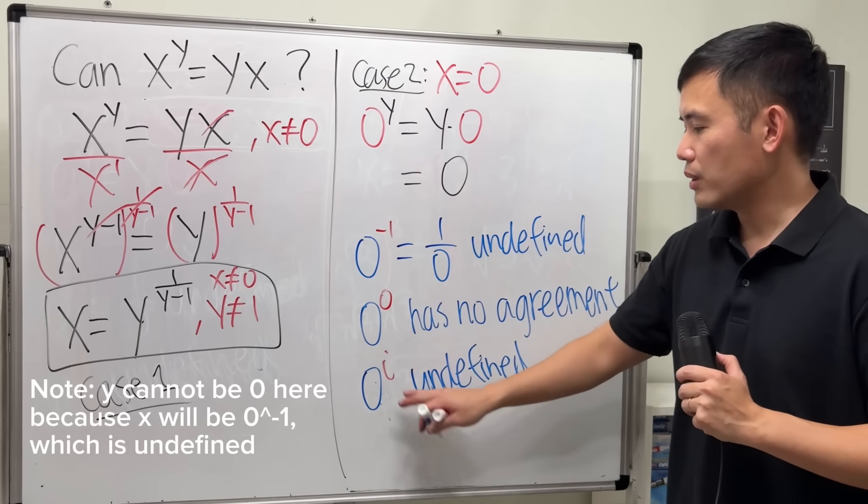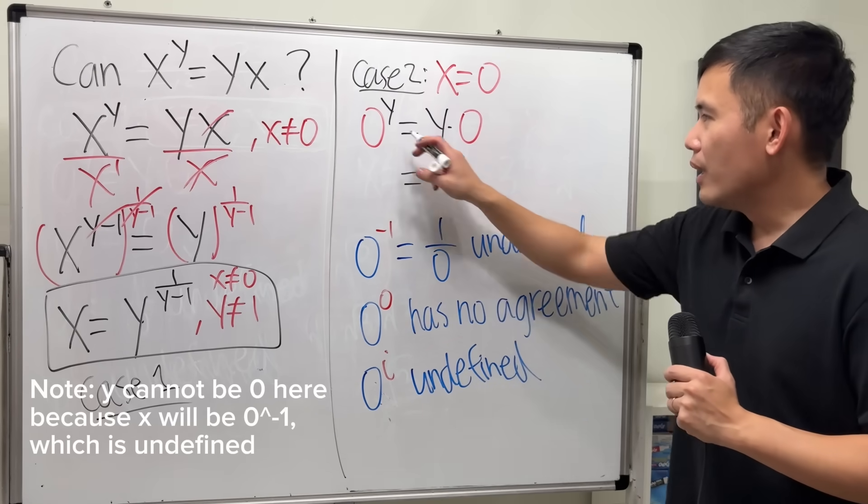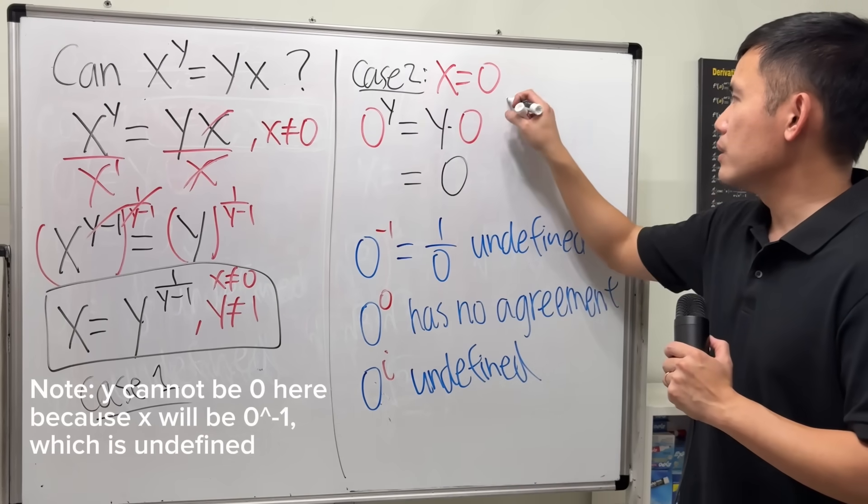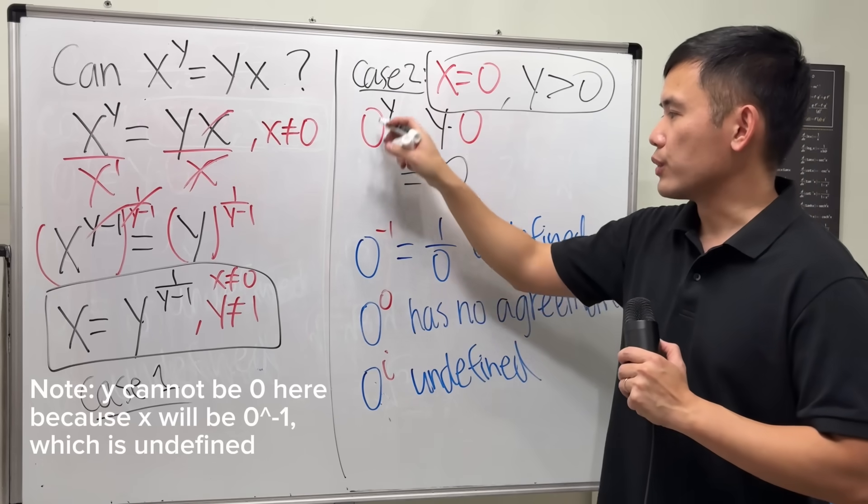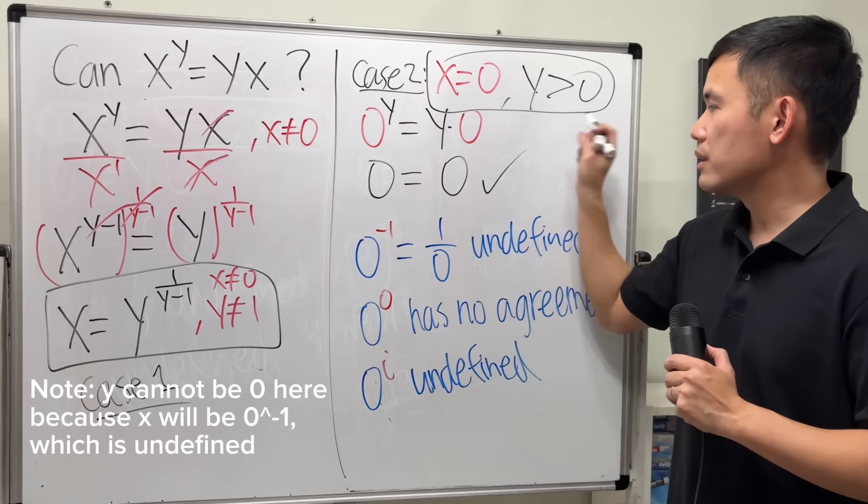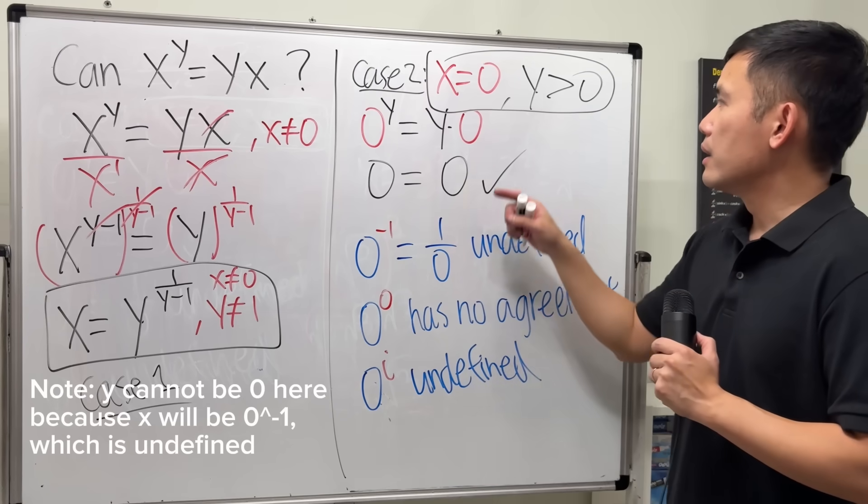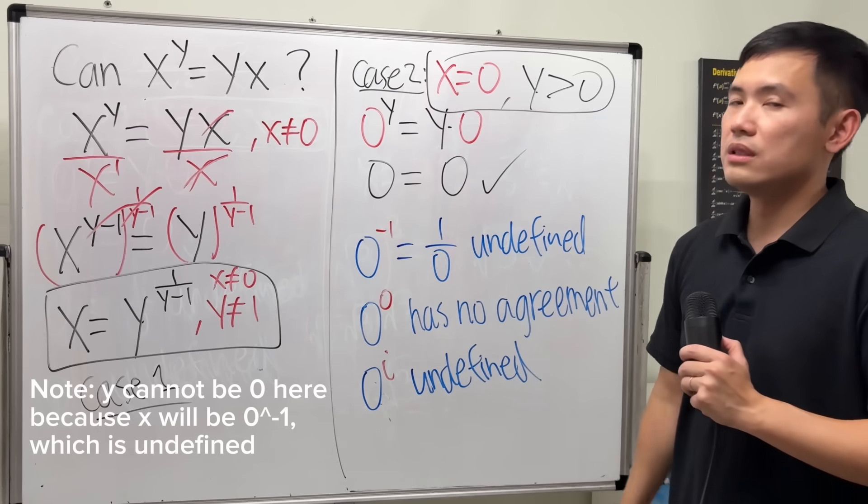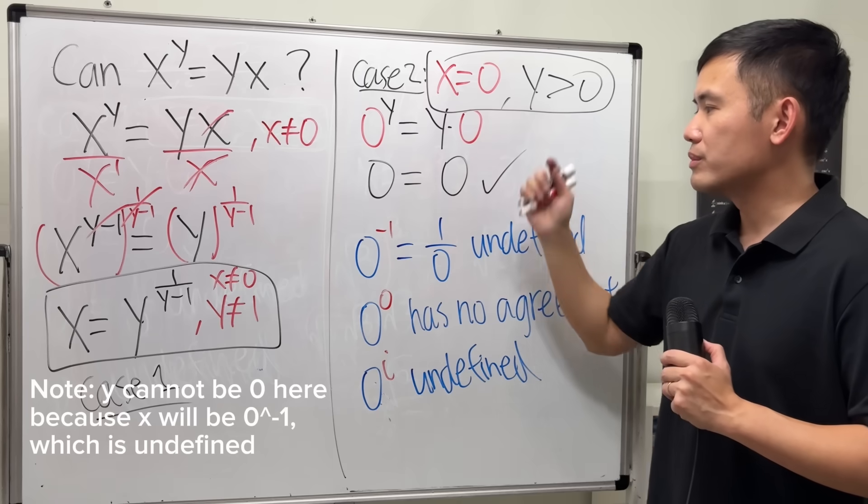So, what do we do though? In order for this to be 0 as well, y has to be greater than 0. When we have positive y, for sure, we get 0. Now, it works. So, that's the solution for case 2. Any positive y with 0. Like, 0 squared is equal to 2 times 0. So, that's that.